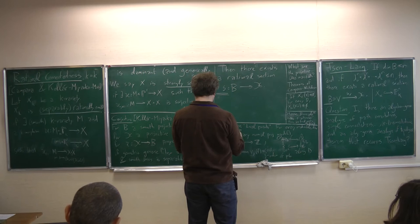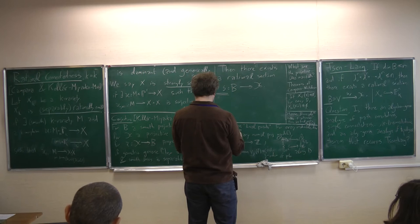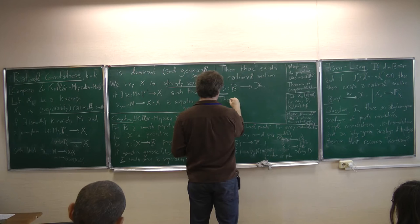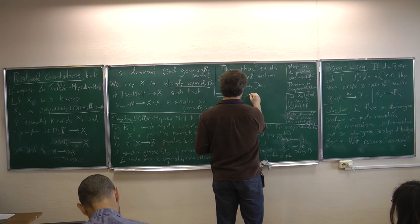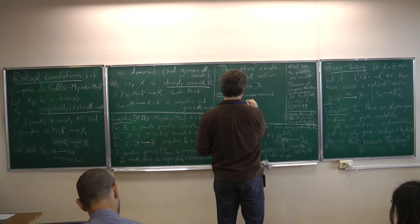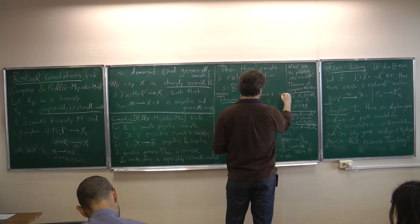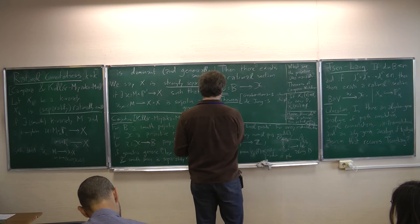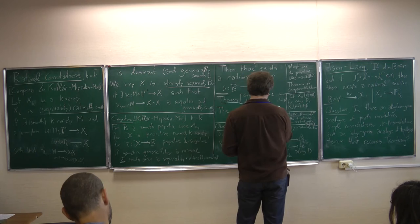In characteristic zero, this theorem was proved by Graber, Harris, and myself. In characteristic p, it was proved by Johan de Jong and myself. So the conjecture is true in all characteristics. Next time, I'm going to prove this theorem, and in order to do that, I'll have to tell you quite a bit more about rationally connected varieties.